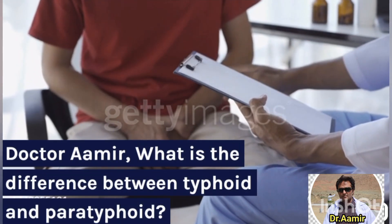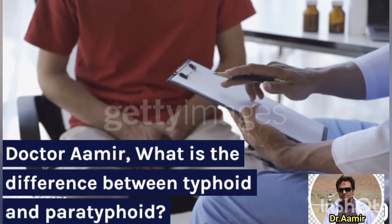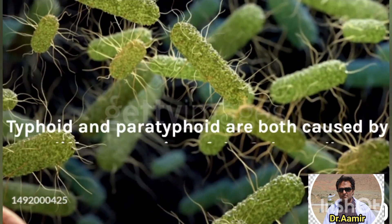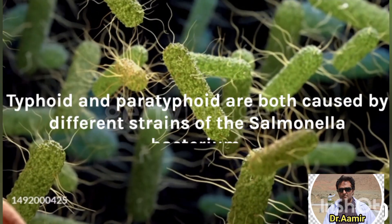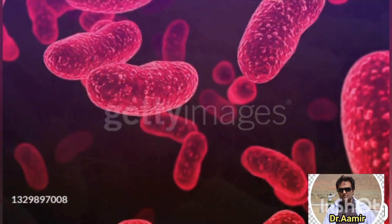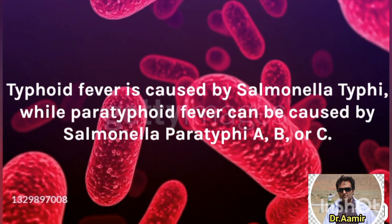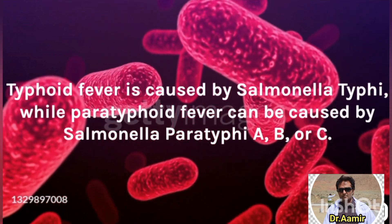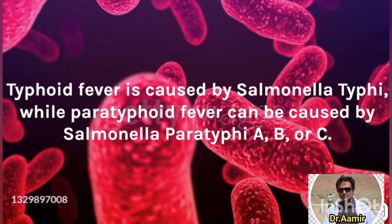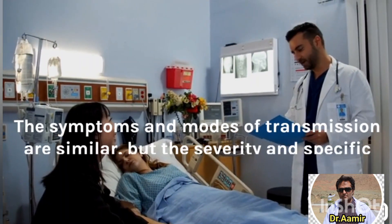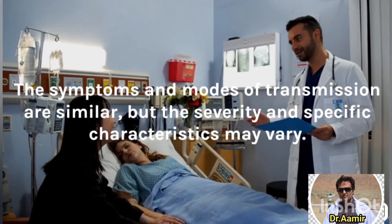What is the difference between typhoid and paratyphoid? Typhoid and paratyphoid are both caused by different strains of the Salmonella bacterium. Typhoid fever is caused by Salmonella typhi, while paratyphoid fever can be caused by Salmonella paratyphi A, B, or C. The symptoms and modes of transmission are similar, but the severity and specific characteristics may vary.